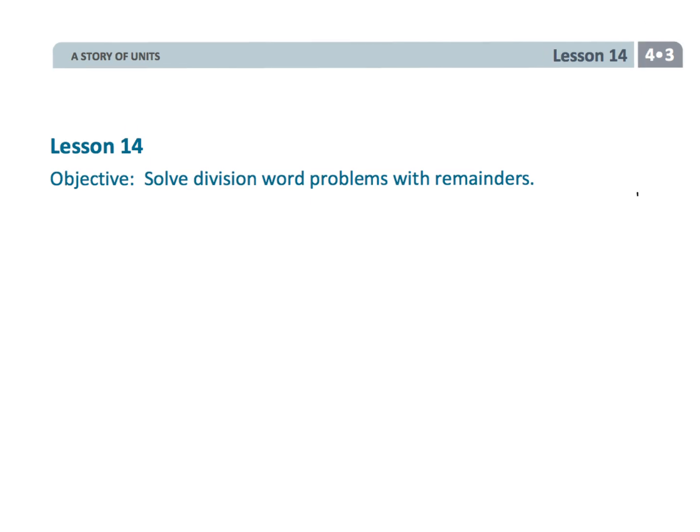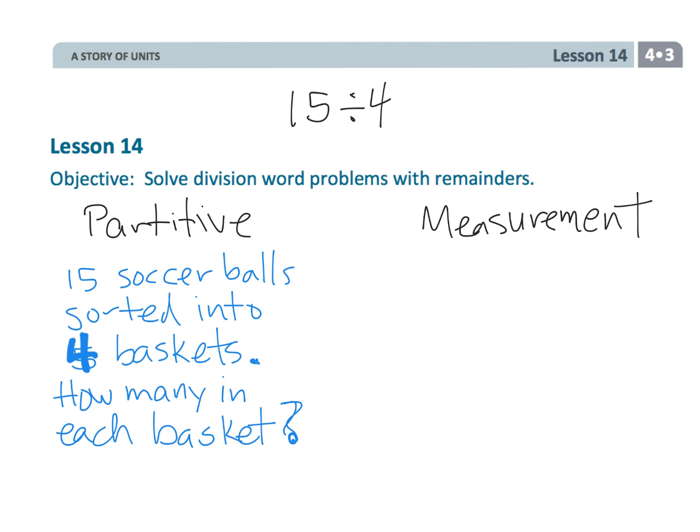So let's take a moment to talk about those two different kinds of division. Suppose we have the problem 15 divided by 4. Two ways that we could think about that problem we could think of it as partitive and we could think of it as measurement. So partitive, an example of partitive would be 15 soccer balls sorted into four baskets. How many are in each basket? So the idea of the word partitive means we know we're taking these 15 and we're sorting them into four parts, into four buckets.